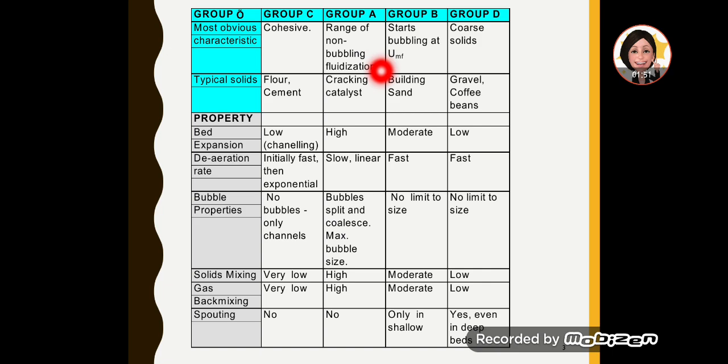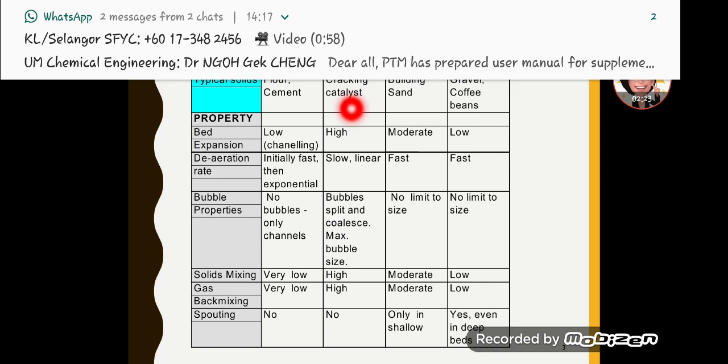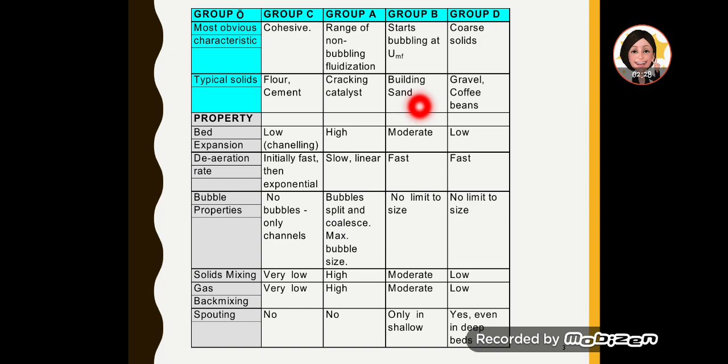For group A, it's a range of non-bubbling to bubbling fluidization. If you notice when we saw a video in the lecture part 2, that was group A powders. Group A powder was giving a range of fluidization from non-bubbling to bubbling fluidization. A simple example of this group A powder is cracking catalyst, so catalyst can be bubbling as well as non-bubbling.